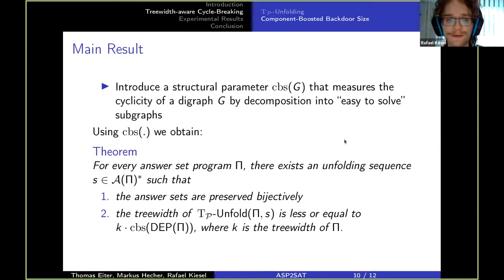So what we want to do is we want to get good unfolding sequences and we do that using a new structural parameter called component boosted vector size of a graph, that measures the cyclicity of a digraph by decomposition into easy to solve subgraphs.